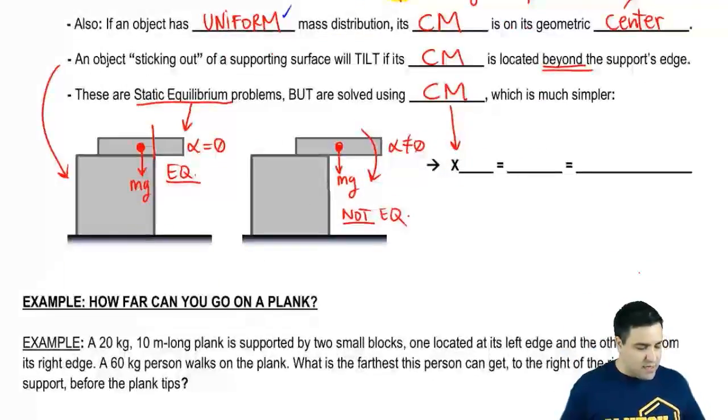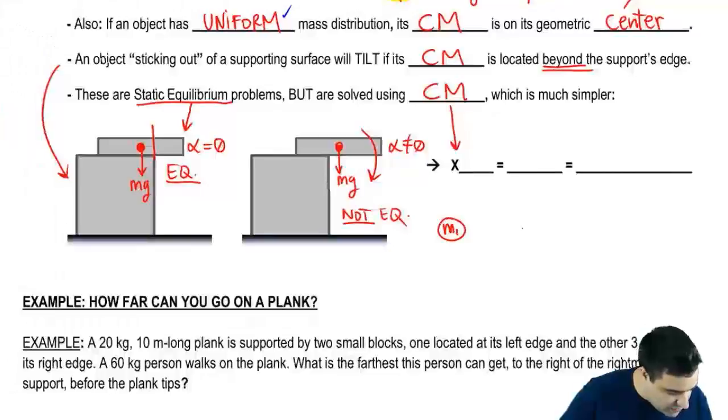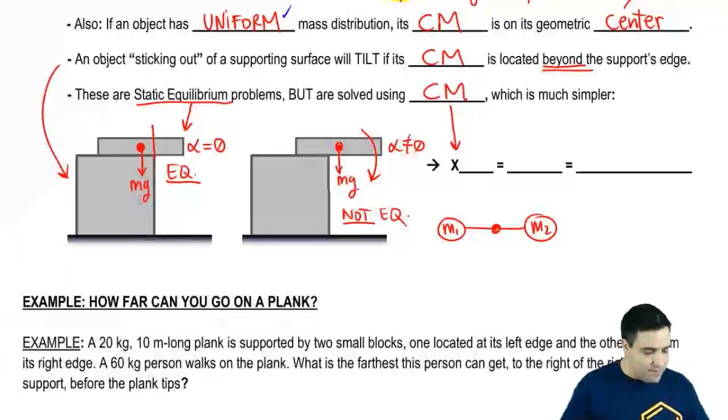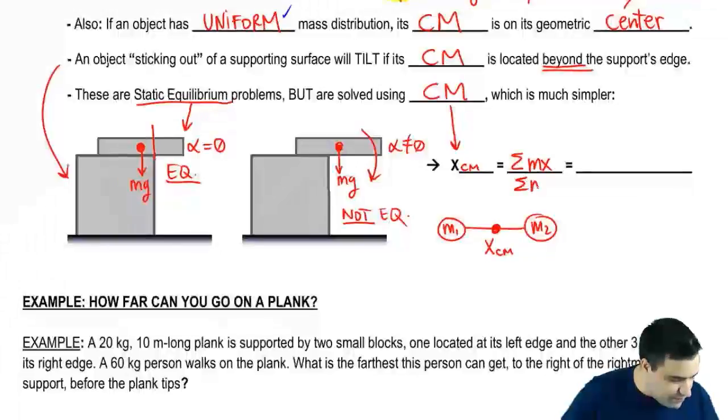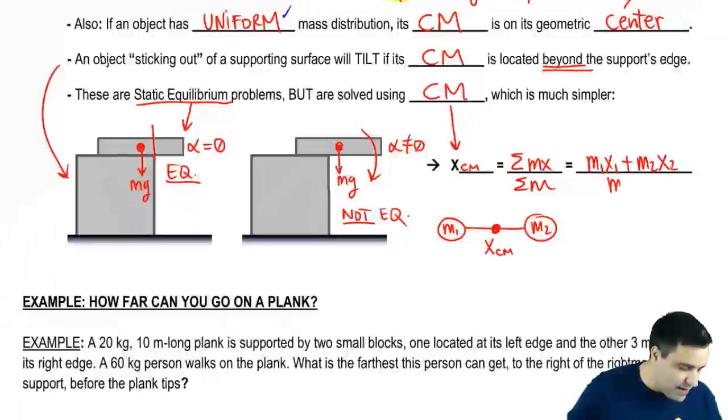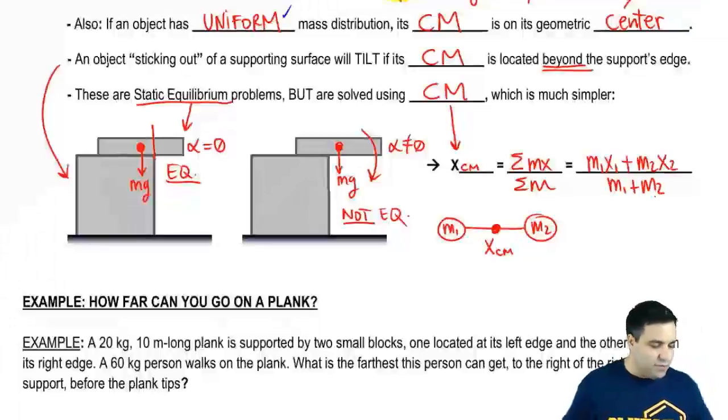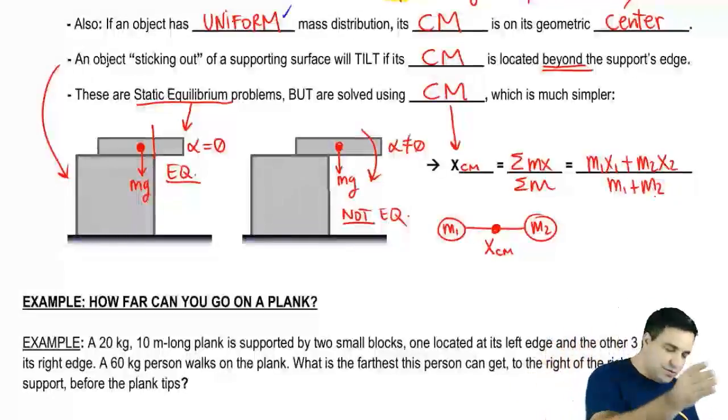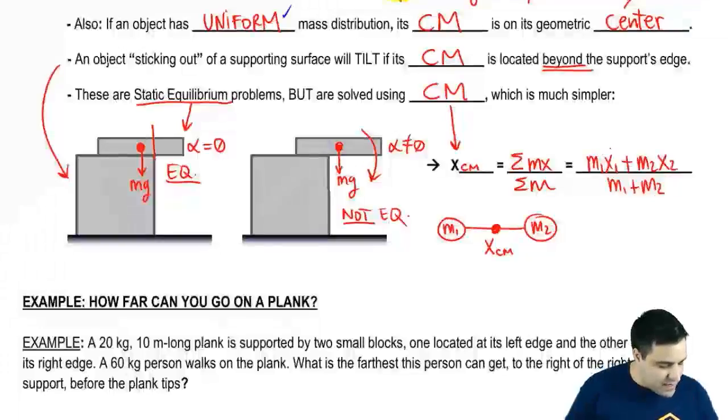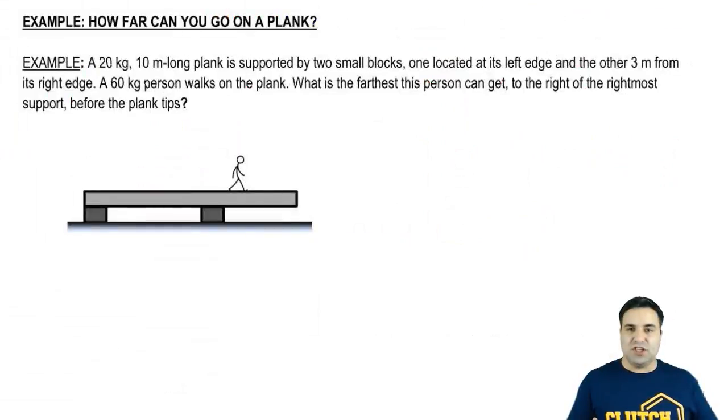So the equation here is that, let's say if you have two objects, M1's here and then M2's here, and you want to find the center of mass between them, the x position of the center of mass will be given by the sum of mx divided by the sum of m. And what this means for two objects is m1 x1 plus m2 x2 divided by m1 plus m2. If you had three objects, you'd keep going, m1 x1, m2 x2, m3 x3. M are the masses, and x is the x position of that object.